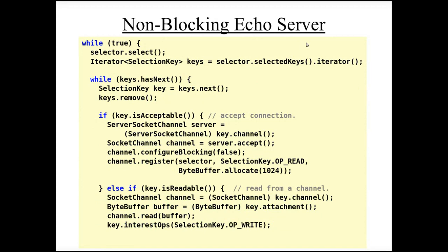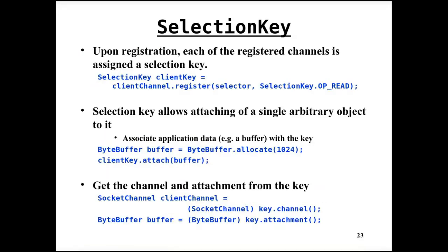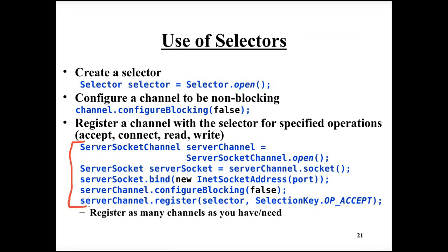Now that we have covered all abstractions of the Java NIO API, let's look at a non-blocking echo server example. It will use non-blocking communication, receive a message, and echo back the same message. Before the main code, the server channel has been opened, the socket has been bound to a particular address, the server socket has been configured non-blocking, and a selector has been registered with the server channel waiting for the accept operation. The selector has also been opened.